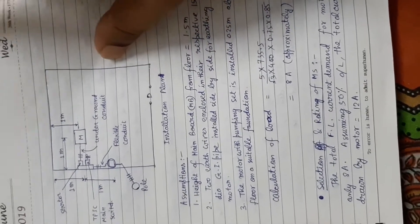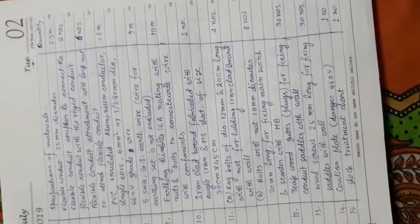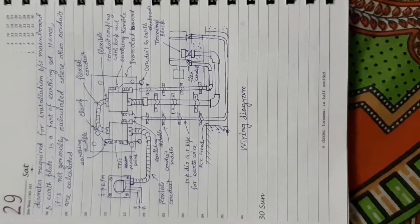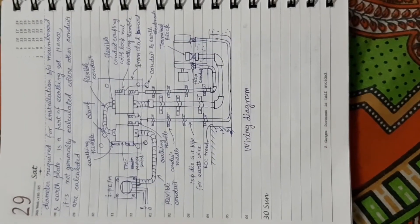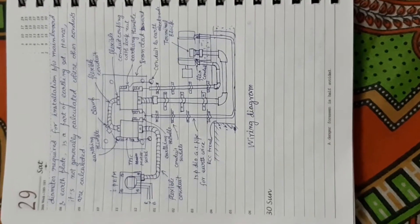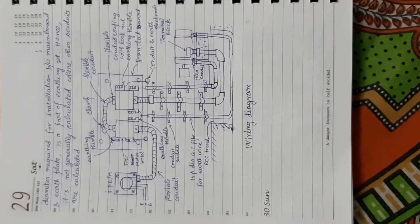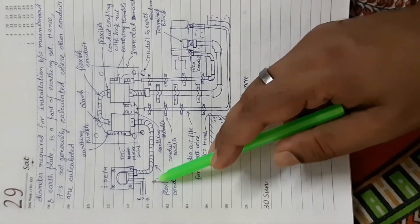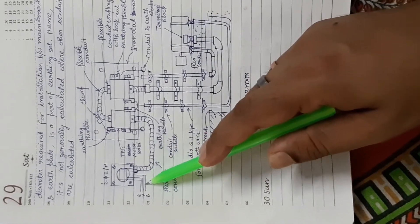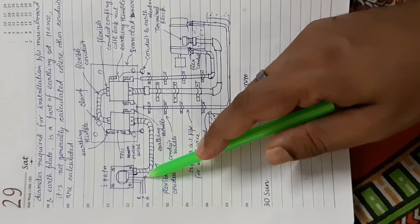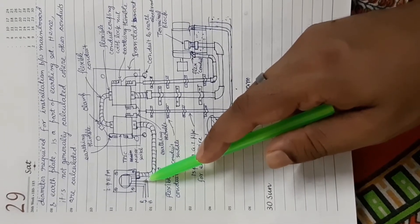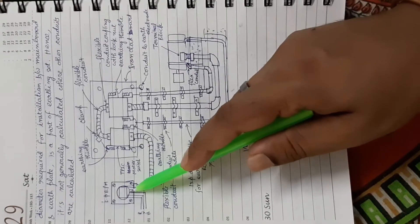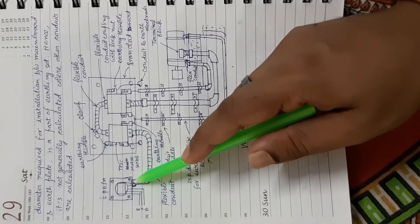Now let's draw the wiring diagram. The main switch connects to the wiring diagram for the power connection to the motor. First, the R, Y, B phases are shown coming in. The pole connects through this cable to the 3-phase energy meter.